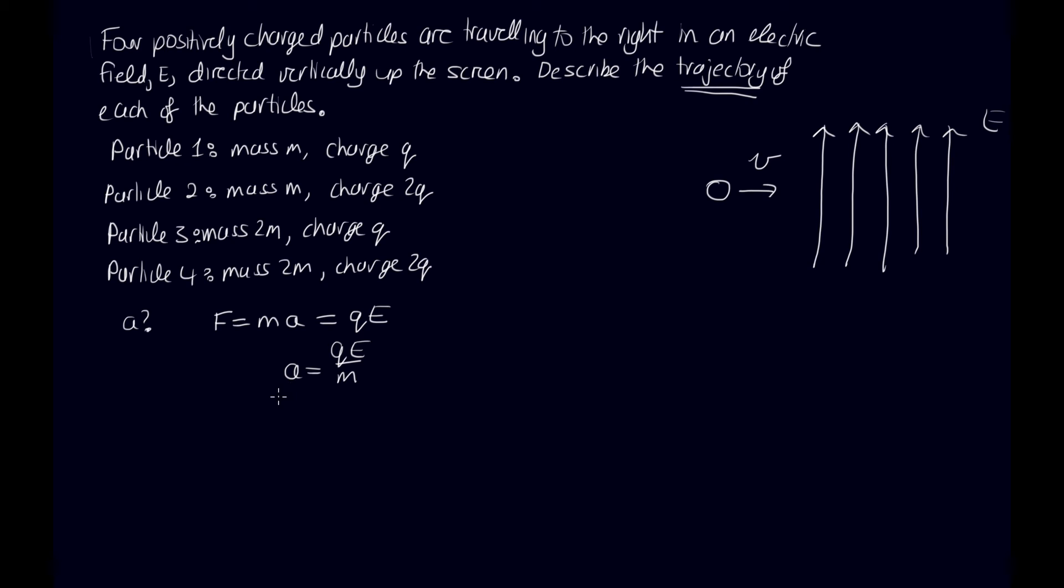So let's look at the acceleration of each of these particles individually. So a1 is going to be, we've got mass m and charge q, so this is just going to be qe on m. a2, in this case we've got a charge of 2q. So this will be 2qe, and the mass is still m.